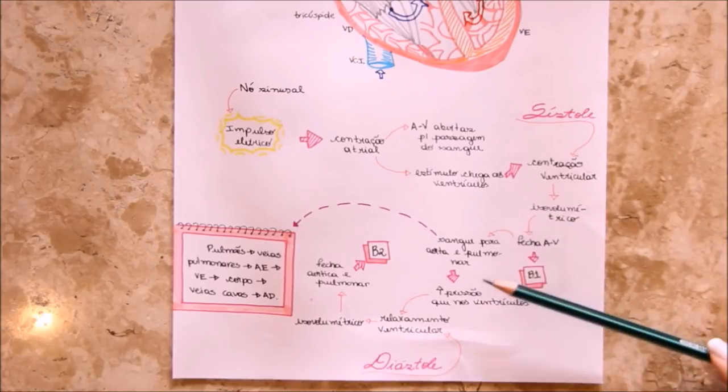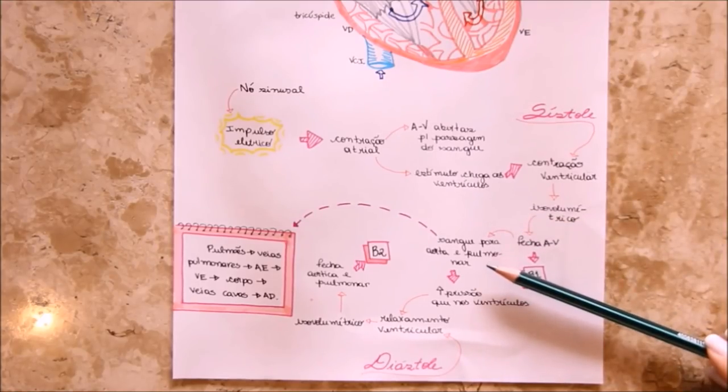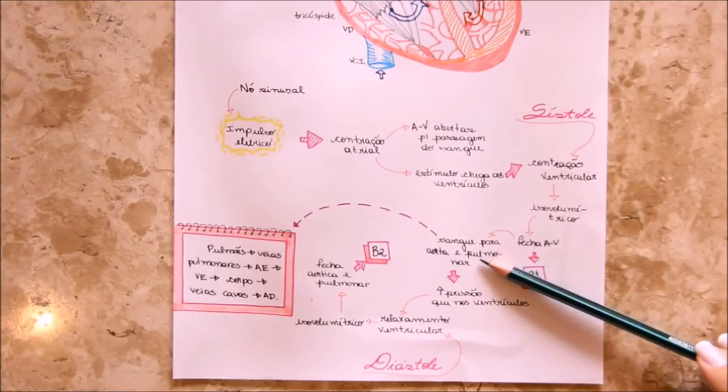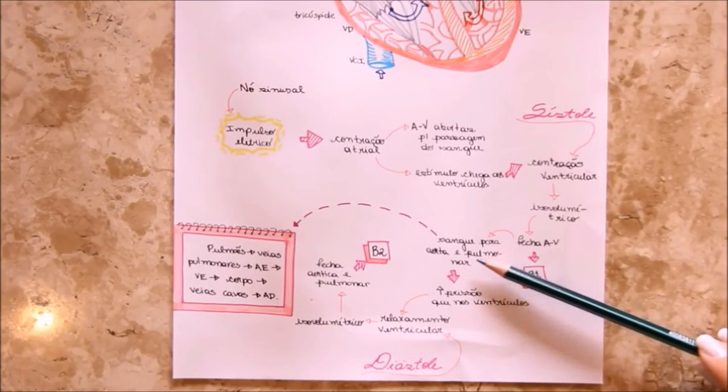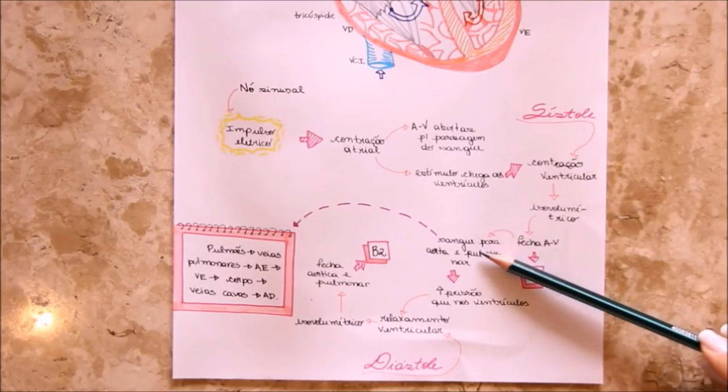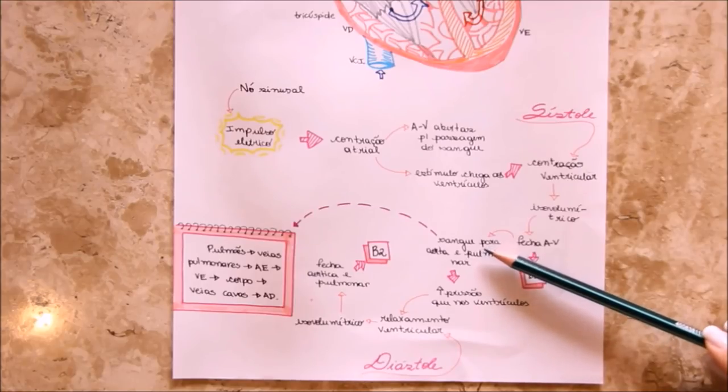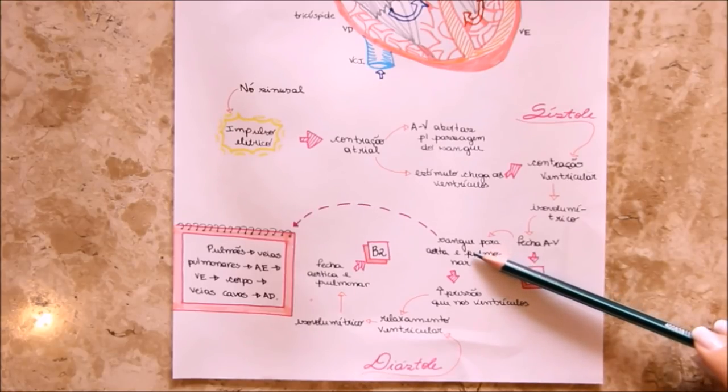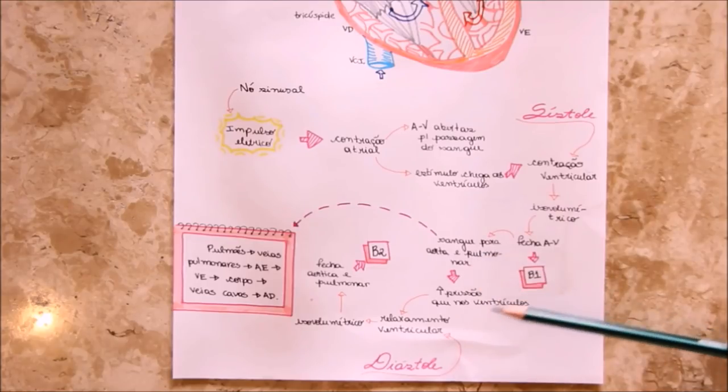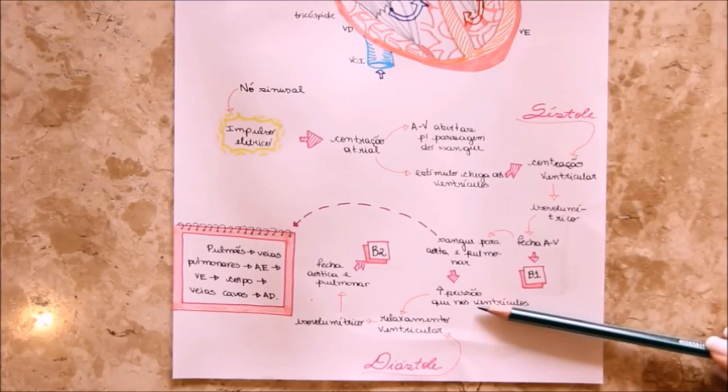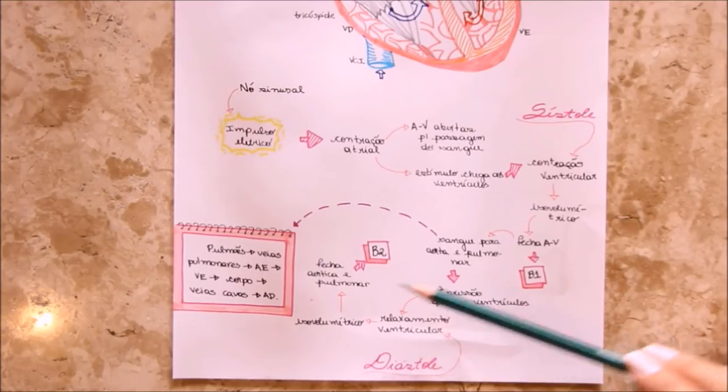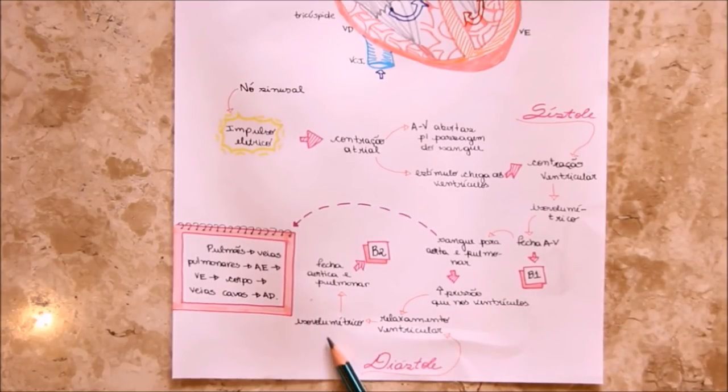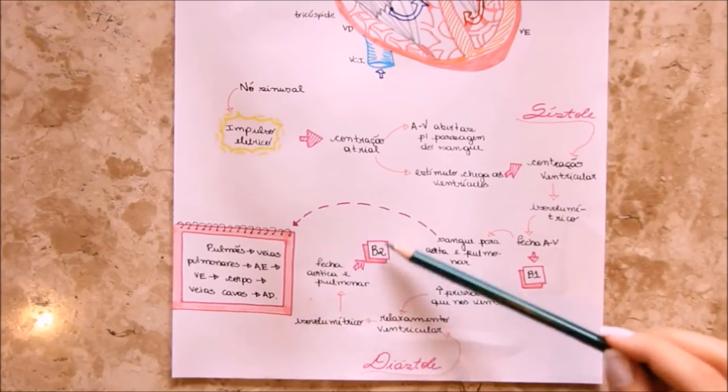Further contraction occurs and blood is ejected into the aorta and pulmonary artery. With this blood ejection, there is opening of the aortic and pulmonary valves. With the end of ventricular contraction, the pressure in the aorta and pulmonary arteries is greater than in the ventricles, which immediately begin a new relaxation. This period is called the isovolumetric relaxation period. It is at this moment that the aortic and pulmonary valves close, producing a new sound, called the second heart sound, or B2.